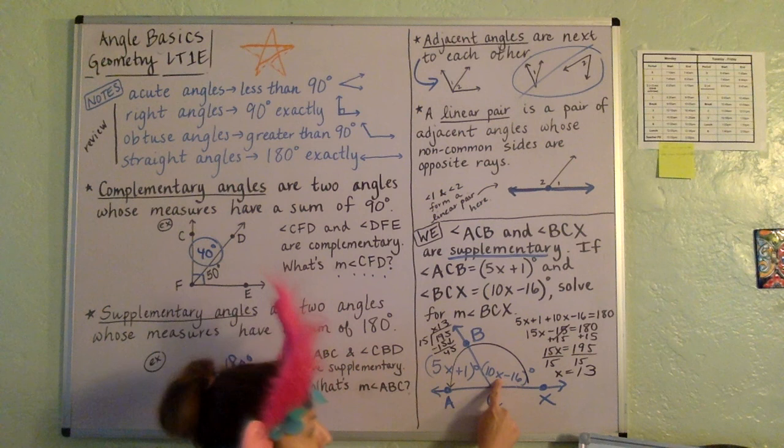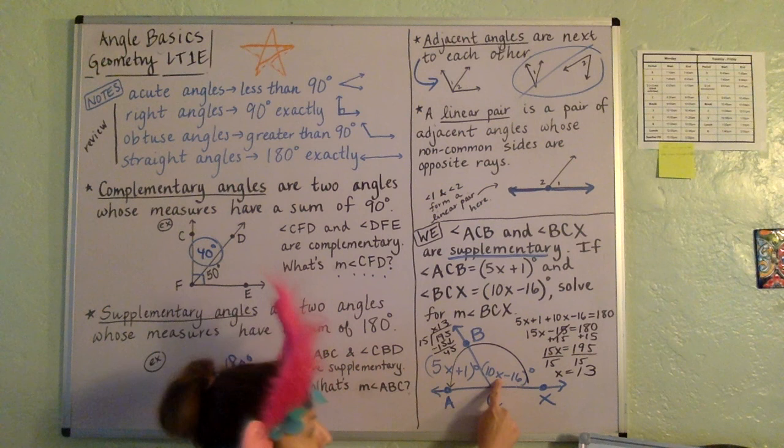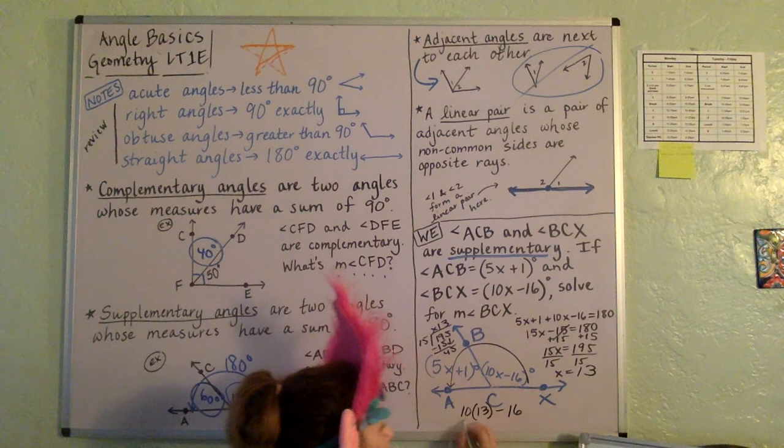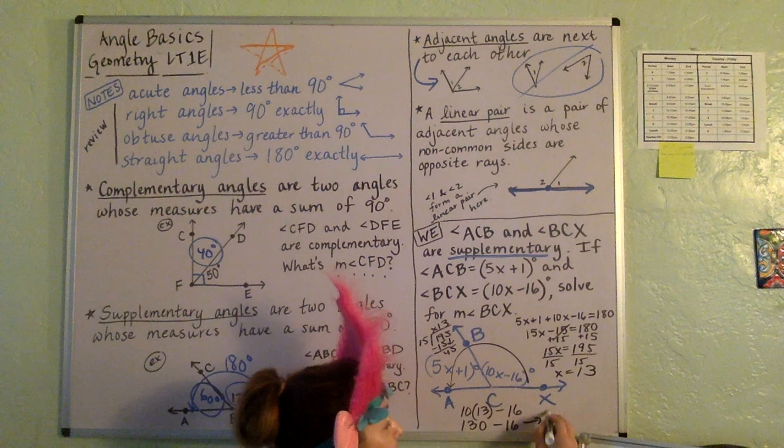So now we know what X is, so let's sub it in. So we're going to have 10 times 13, and then minus 16, which is 130 minus 16, which means the measure of BCX is 114 degrees. So let's just take a look, last problem.